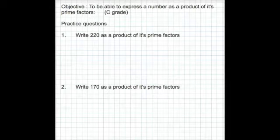Practice question 1. We're going to write 220 as a product of its prime factors. So to start off, we can halve 220 to give us 2 times 110. 2 times 110 gives us 220.